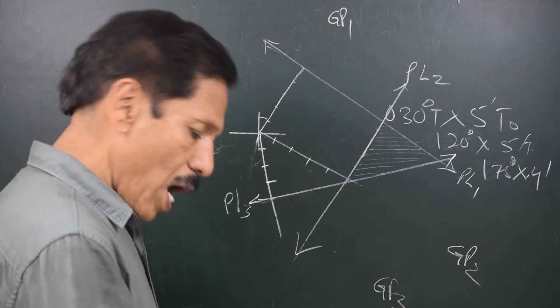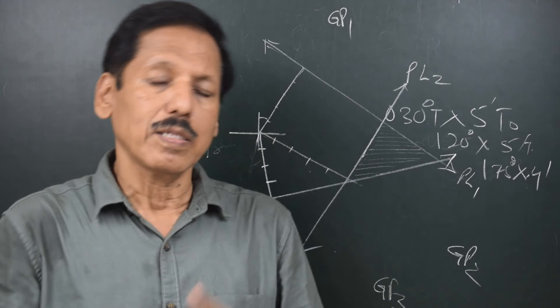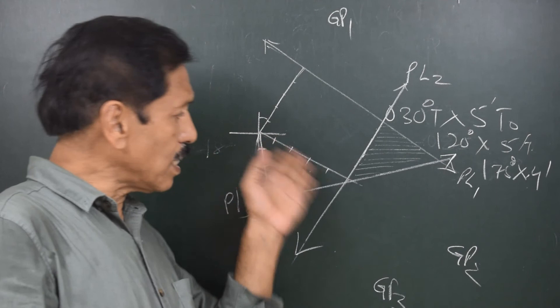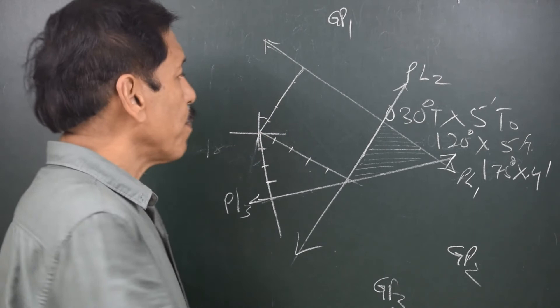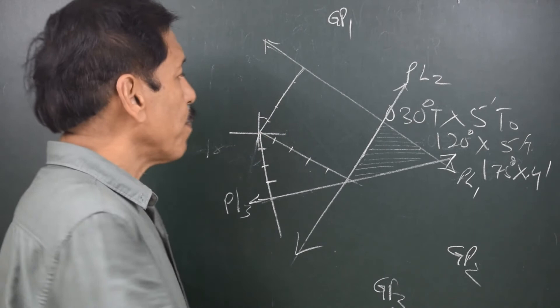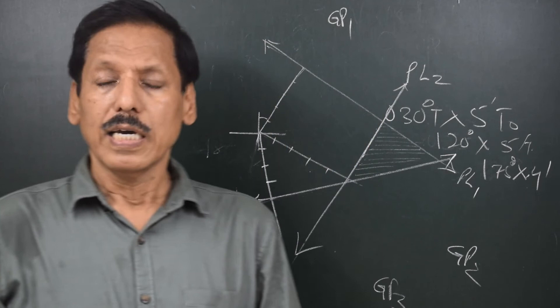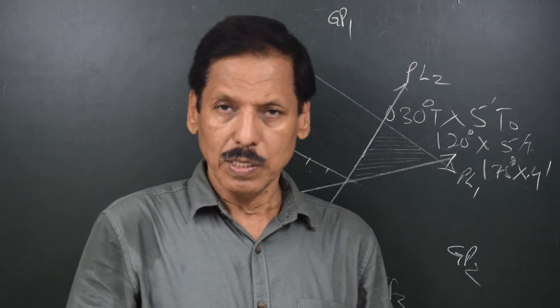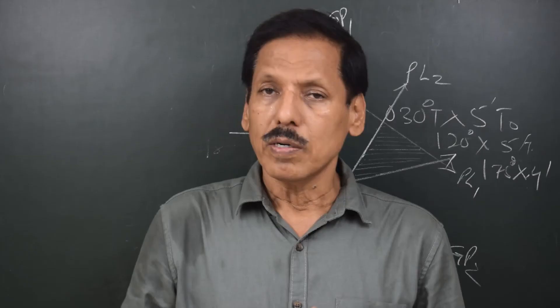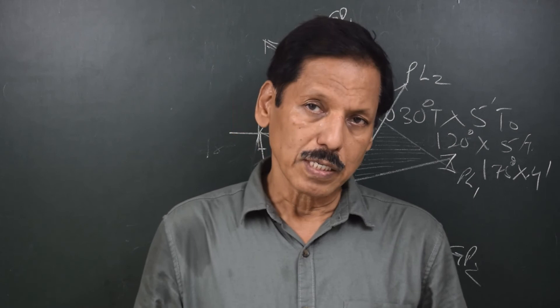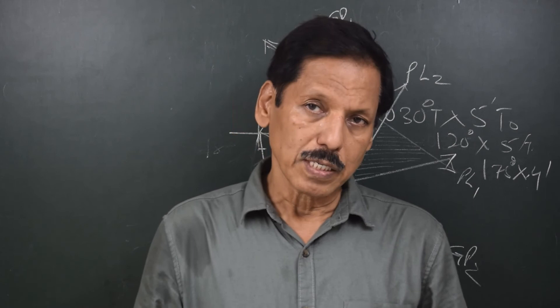This cocked hat is formed because of a similar error in all three position lines, and that error lies along the azimuth line. The error shifts the position line either towards the GP or away from the GP in all three cases similarly. To resolve this cocked hat, we shift all three position lines either towards their respective GPs or away from their respective GPs by the same amount.